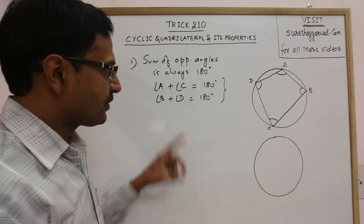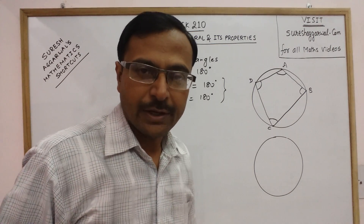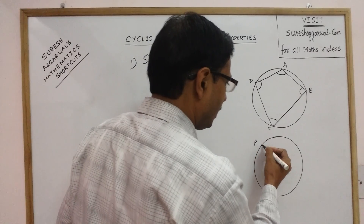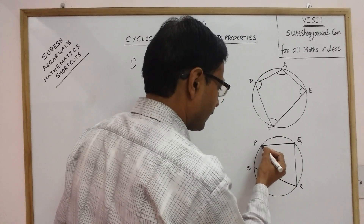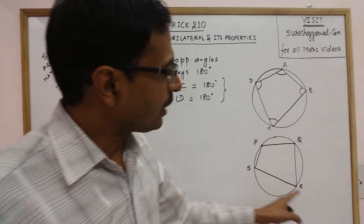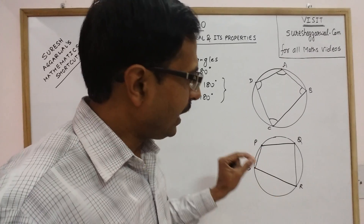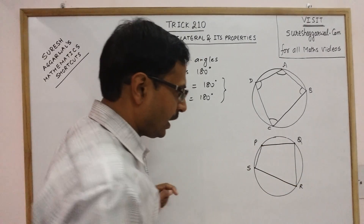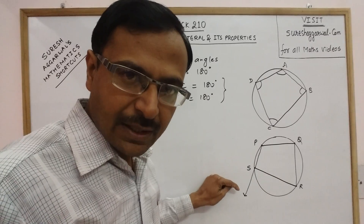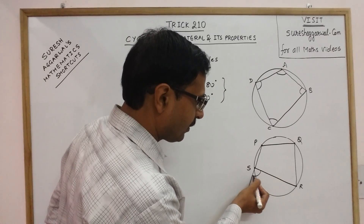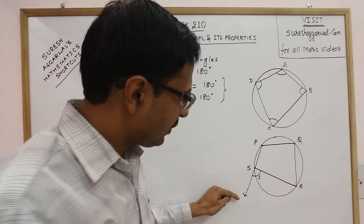After this first important property, let us look into another important property of the cyclic quadrilateral. I am drawing another cyclic quadrilateral PQRS, where all four vertices lie on the circle. Now if you produce any one side of this cyclic quadrilateral — suppose I produce side PS to a point T — one exterior angle is formed.